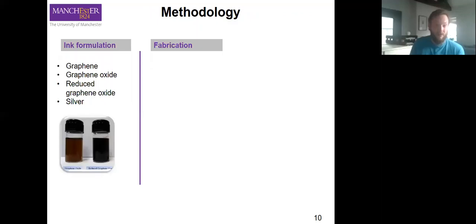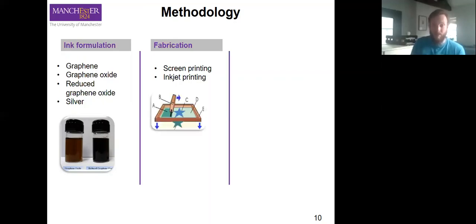Conventional fabrication, several methods, typically screen printing or inkjet printing. Screen printing: higher throughput, it's effectively silk screen similar to as you would do by hand, but we have an automated system. Or inkjet printing using smaller volumes, smaller area, more precise placement.